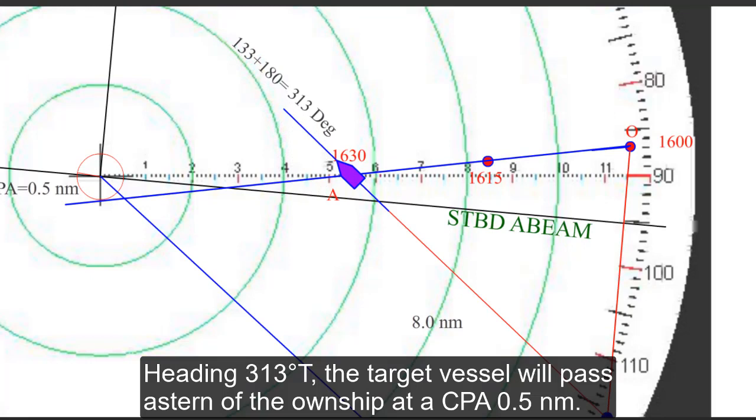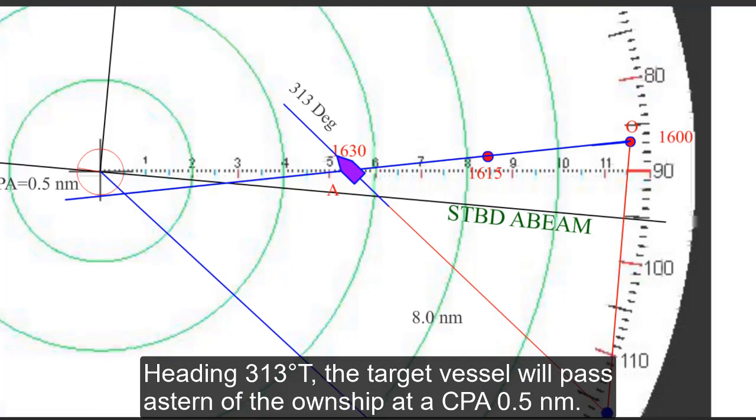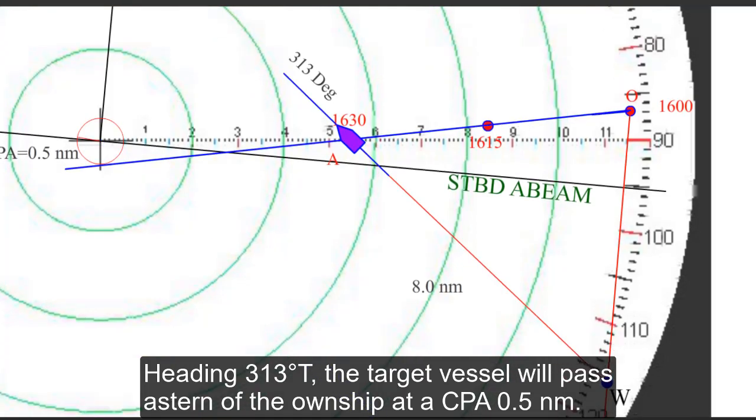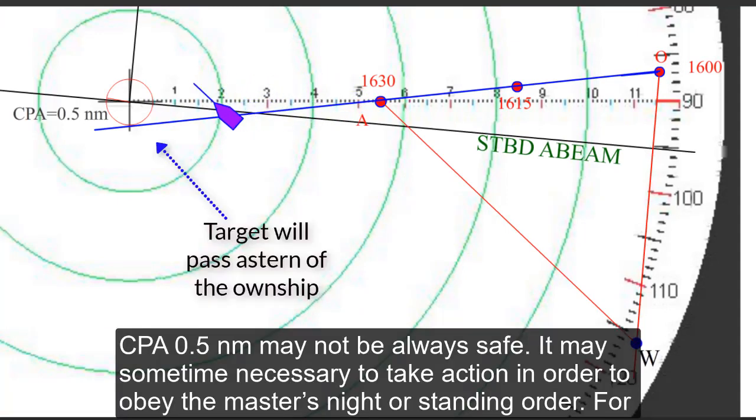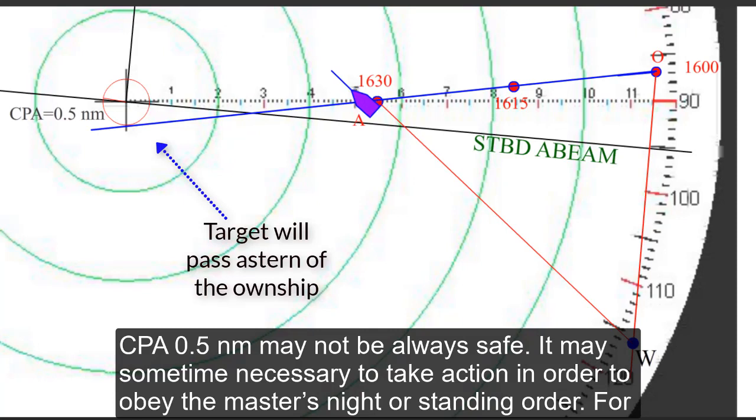Heading 313 degrees the target vessel will pass astern of the own ship at a CPA of 0.5 nautical miles. CPA 0.5 nautical miles may not be always safe. It may sometime necessary to take action in order to obey the master's night order or standing order.